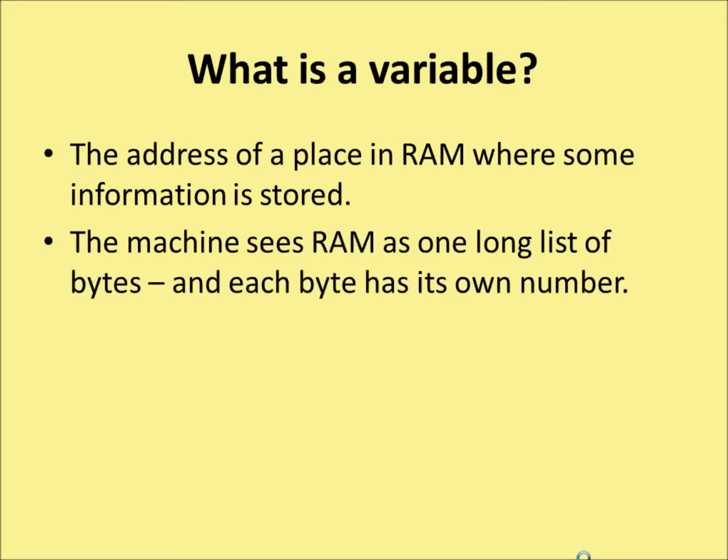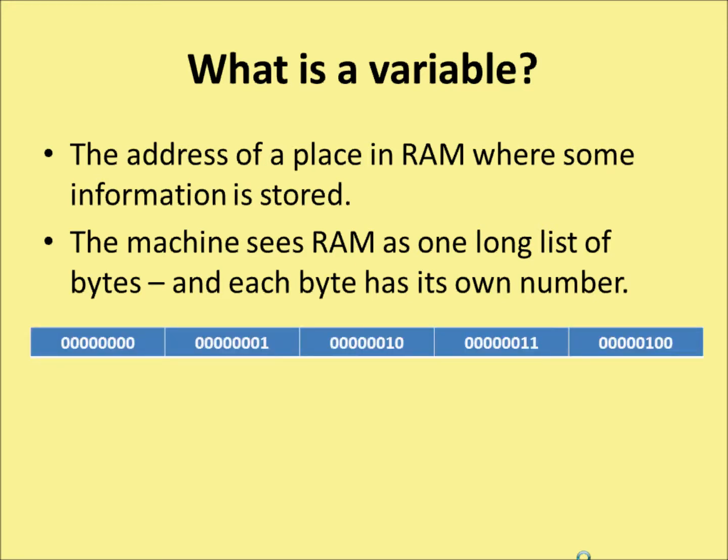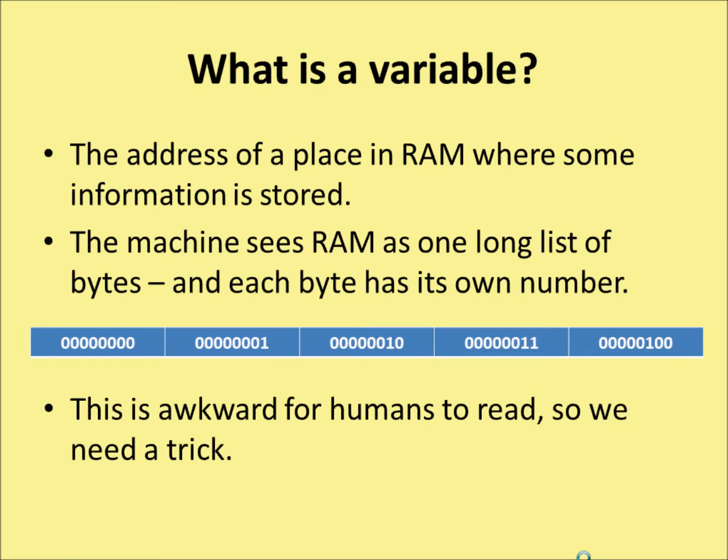The machine sees RAM as one long list of bytes, and each byte has its own number. These start at 00000000 and go all the way through to whatever the highest numbered byte is in RAM. Each computer has a different amount of RAM, so you can have different lengths of this street. But this is very awkward for humans to read, so we need a trick.